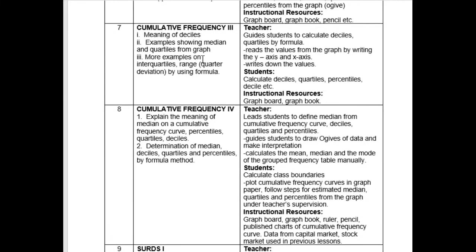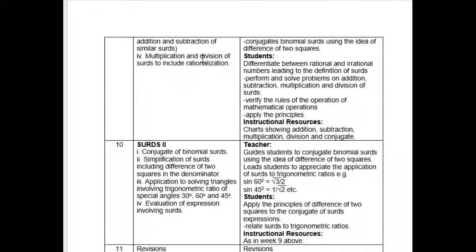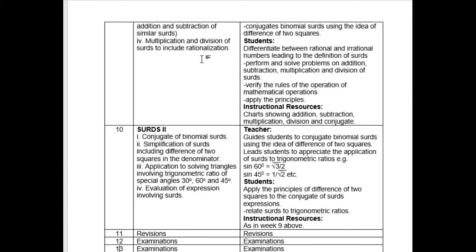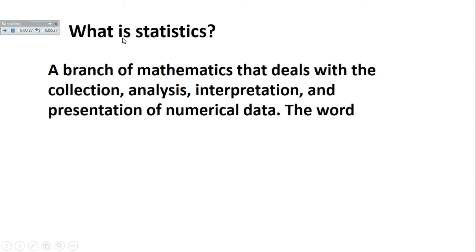Week seven is cumulative frequency as well — you can see we have much to do as far as statistics is concerned. Week eight, then week nine is surds, that is how to work with rational and irrational numbers. Week ten is surds also. So generally we have statistics from week one to week eight, then surds in weeks nine and ten.